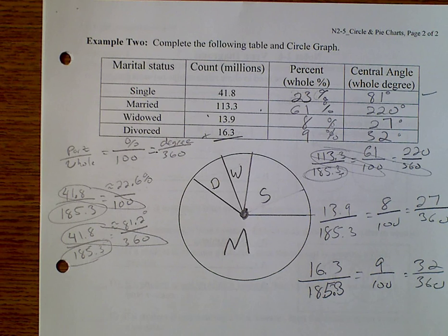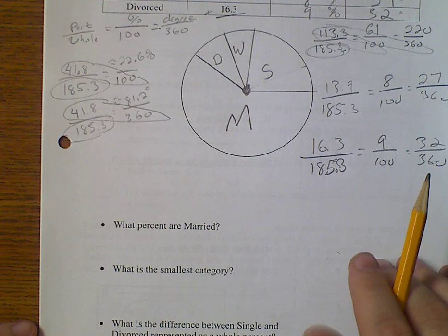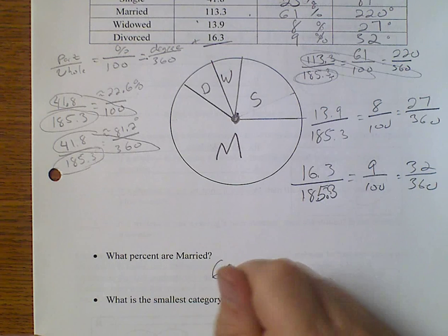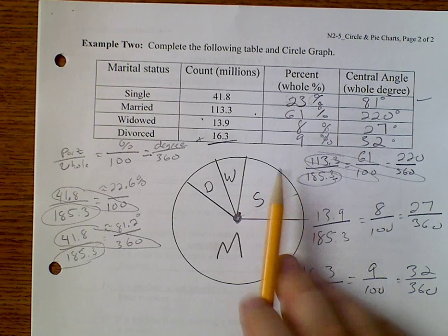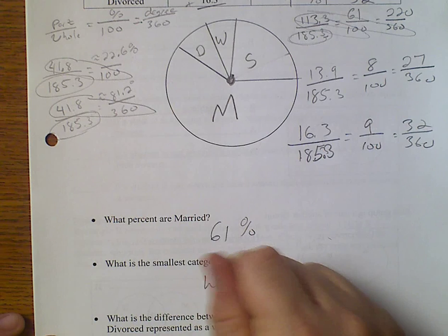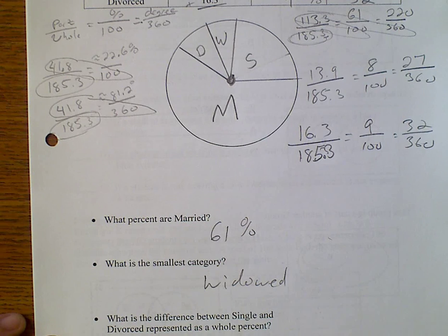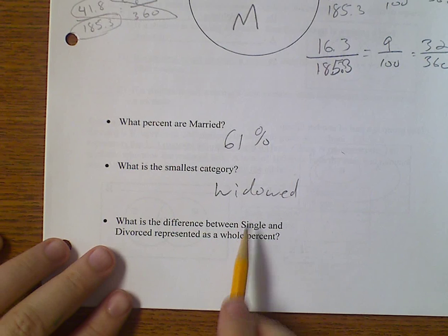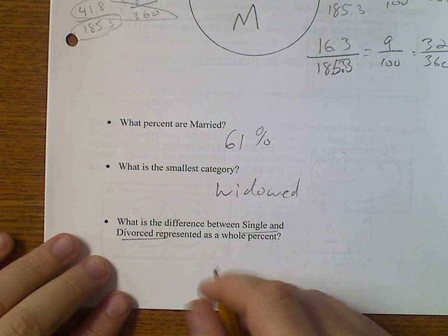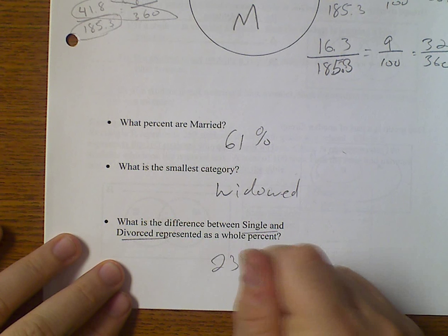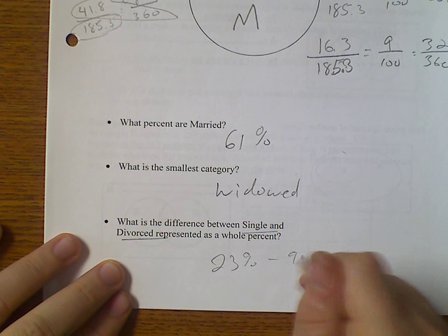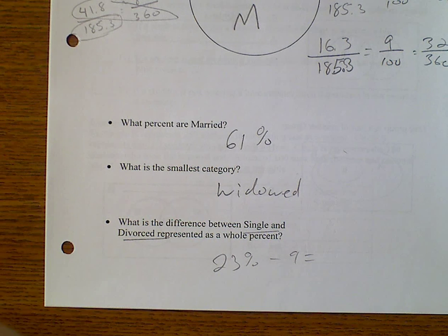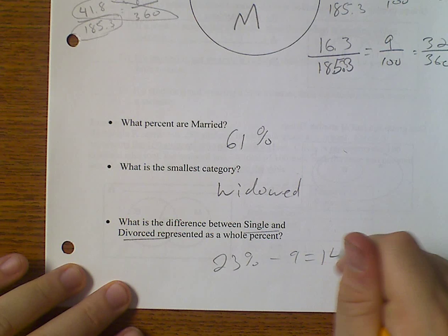Now let's go ahead and answer some questions. What percent are married? Well, we just look up here. Married is 61%. Our smallest category would be the 8% or widowed. And what's the difference between single and divorced as a whole percent? Well, single is 23%. And divorced is 9%. So 23 minus 9 gives us 14%.